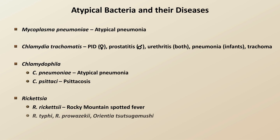R. typhi, R. prowazekii, and Orientia tsutsugamushi — which was until recently a member of the Rickettsia genus — these three species all cause forms of the disease typhus: murine, epidemic, and scrub variants, respectively.